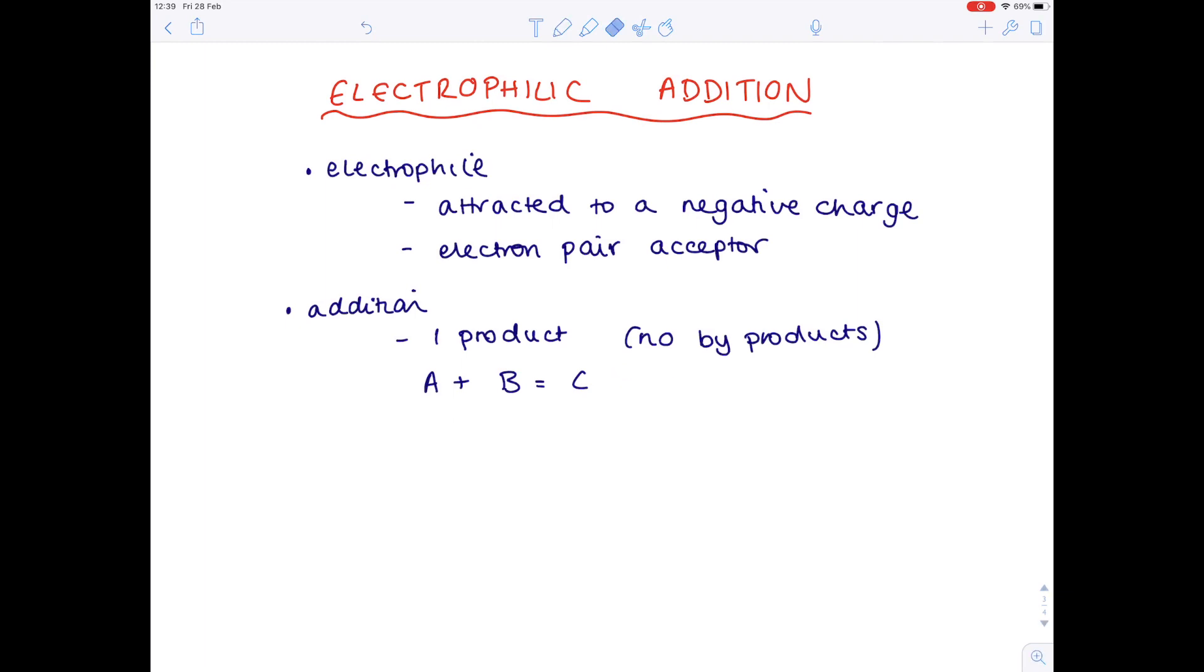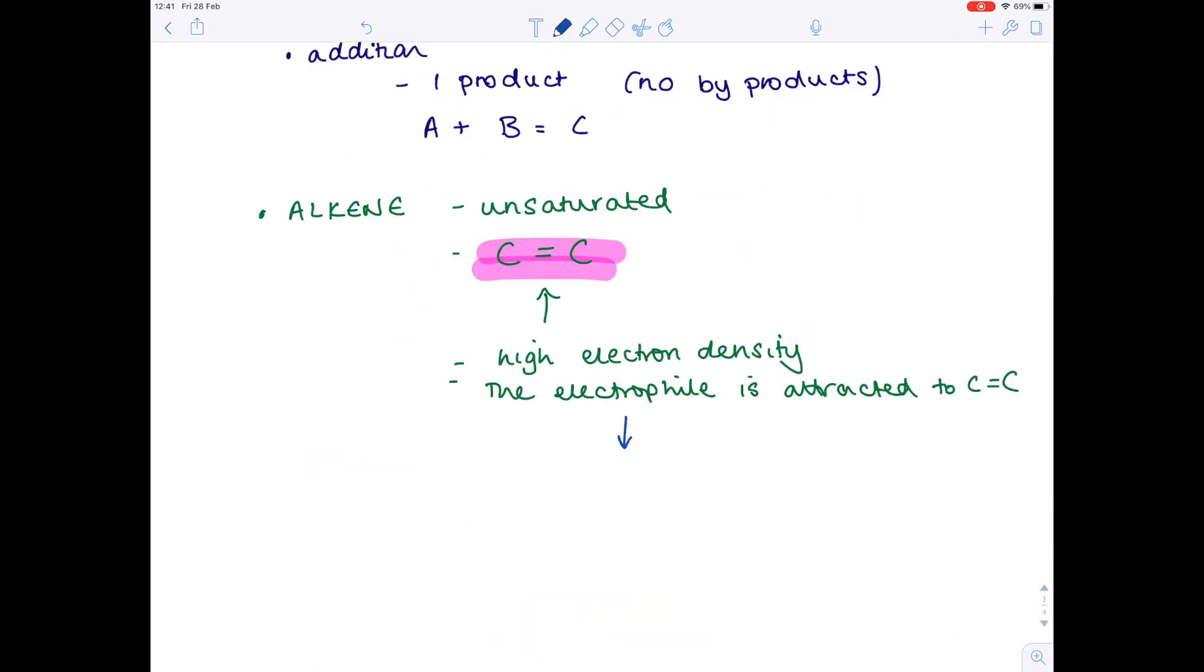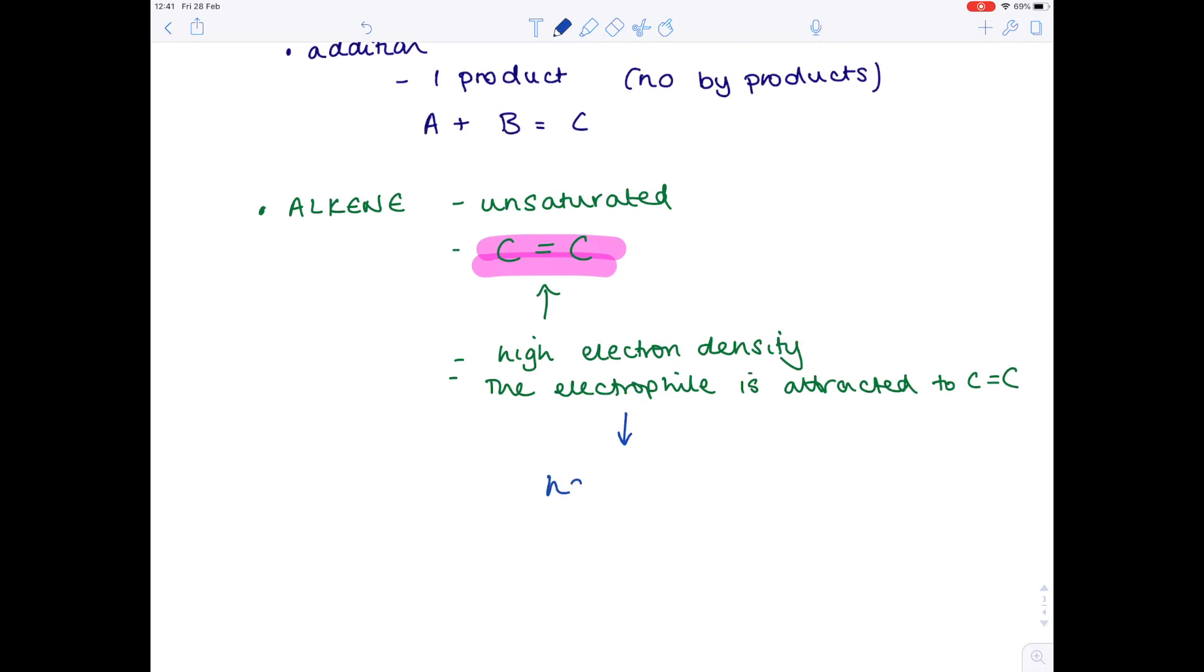You just get one product when you're looking at an addition reaction. But what you actually need in electrophilic addition, notice that you need an alkene. Remember that alkenes are unsaturated, which means that they contain a carbon-carbon double bond. This is essential. The electrophile is attracted to the carbon-carbon double bond, and that's because that carbon-carbon double bond is an area of high electron density. Now we need to know what electrophiles will actually be attracted to that C double bond C, and really we're mostly looking at halogens. Key examples will include bromine and chlorine, as well as hydrogen bromide.